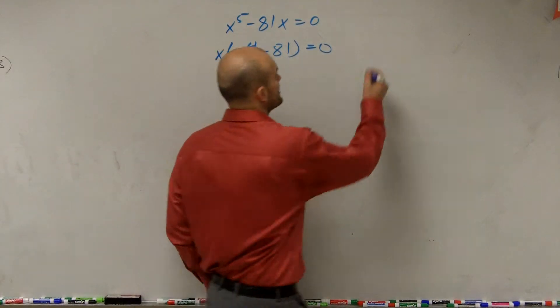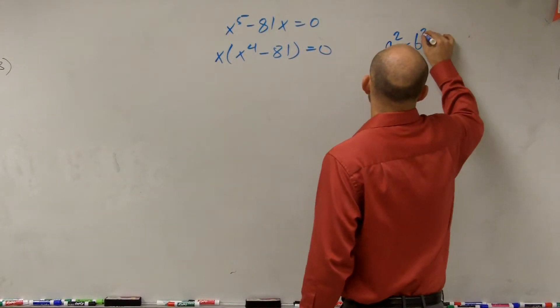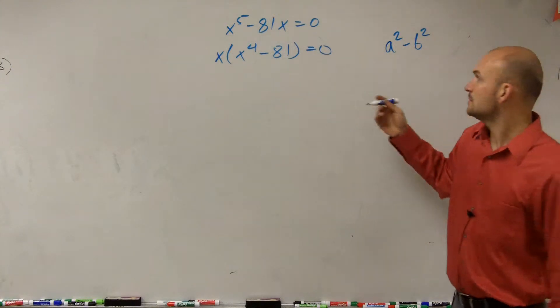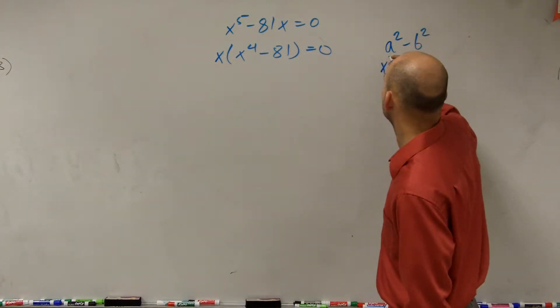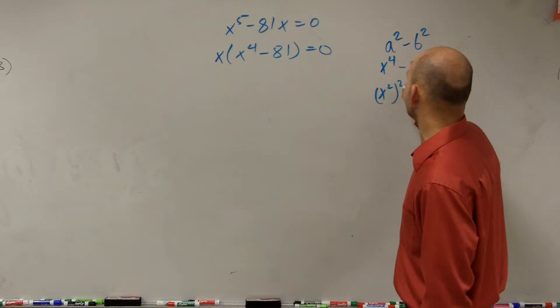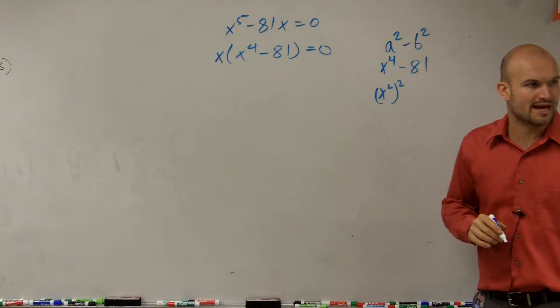Well, you notice that this is a difference of two squares. Can x to the fourth be written as a squared number? Yeah. Could we write it as x squared squared? Would that give you x to the fourth?